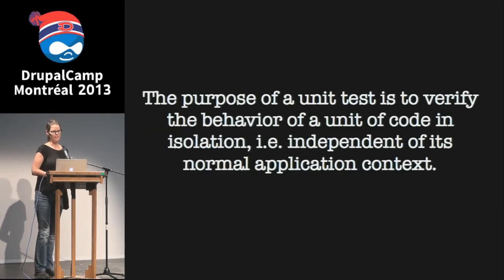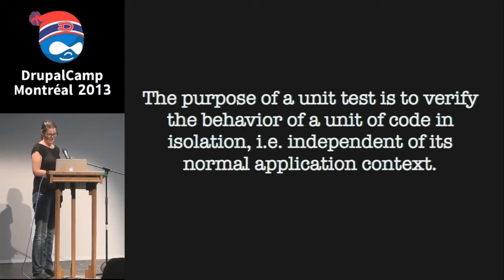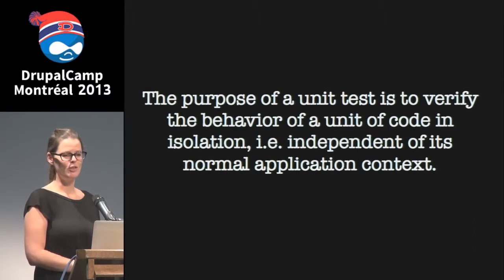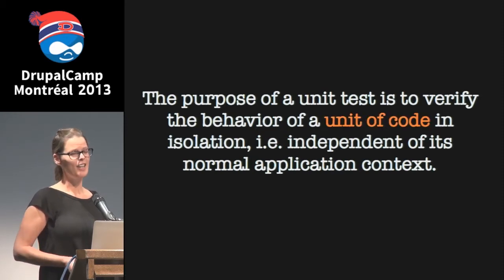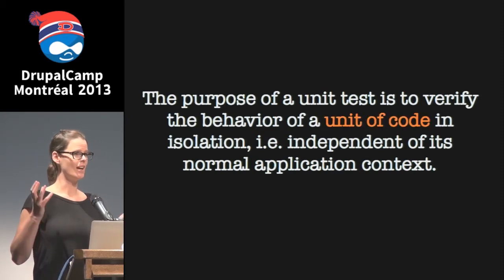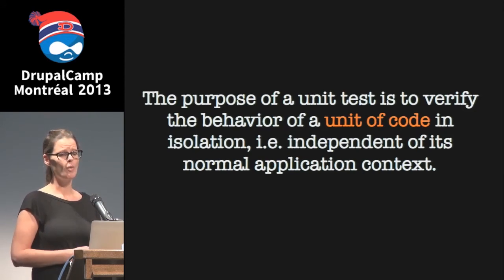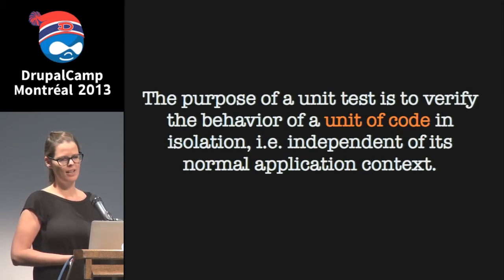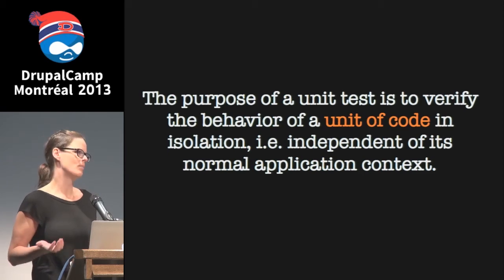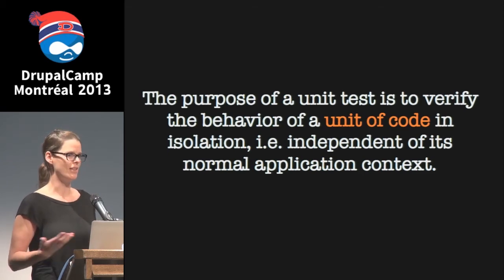So what is unit testing? The purpose of a unit test is to verify the behavior of a unit of code in isolation — independent of its normal application context. A unit of code could just be a function, or maybe you're testing an entire class if it's a small class. It's basically the smallest piece of code that you can test. Most commonly it'll be a method in a class.